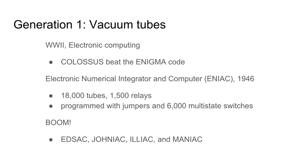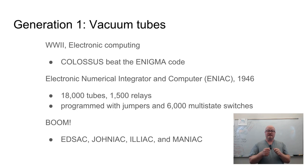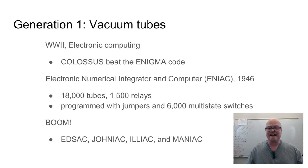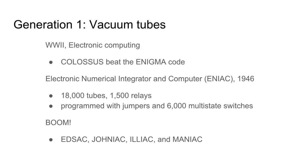To program the ENIAC you had to use jumpers and multi-state switches — like operator cables on an old telephone switchboard. Computing exploded from there, and all kinds of machines based on this technology started to appear with names that paid homage to the ENIAC: the EDSAC, the JOHNNIAC, the ILLIAC, and the MANIAC. A little later, a cardboard-based computer for children was introduced called the CARDIAC.